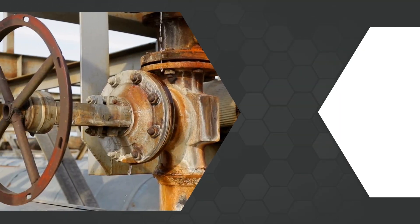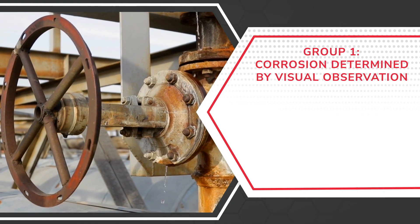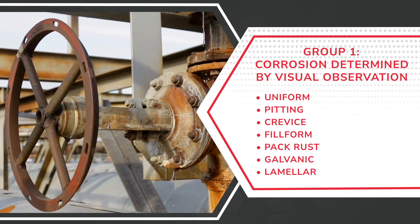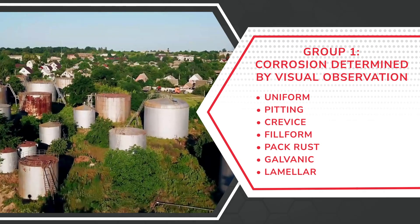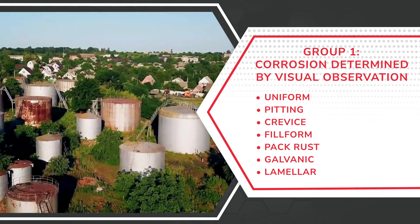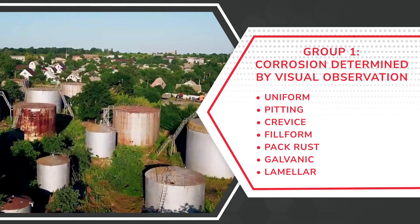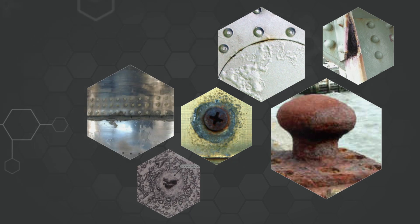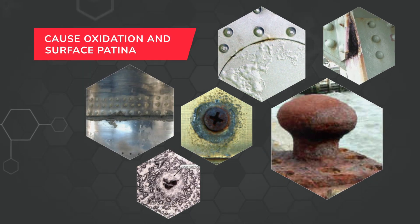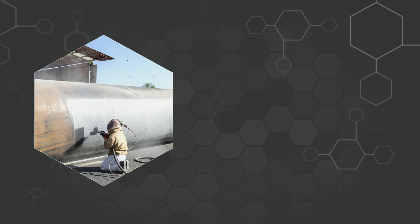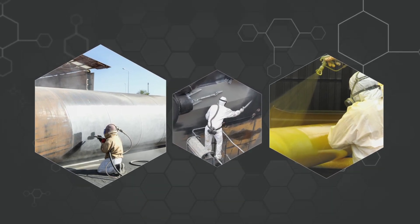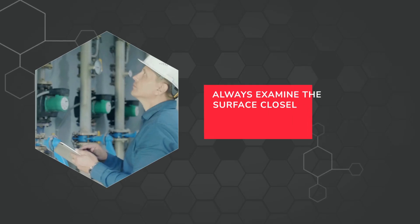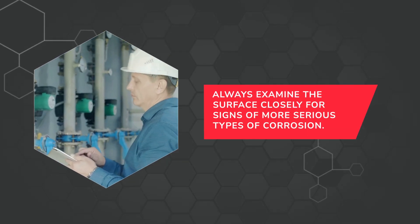The first main type of corrosion is the form that can be seen with the naked eye. These forms of corrosive attack generally occur evenly over the entire surface area. They can be easily measured and predicted, and rarely will they cause disastrous failures. When protective coatings break down, this type of corrosion will cause oxidation and surface patina. Surface corrosion should be treated or repaired before general thinning sets in and causes failure. Always examine the surface closely for signs of more serious types of corrosion.